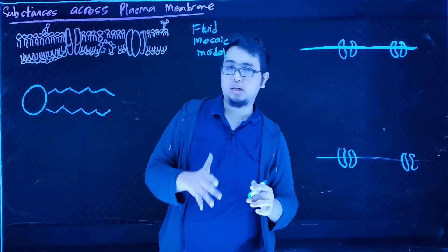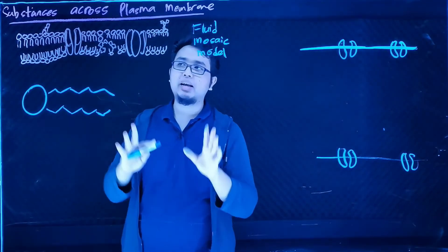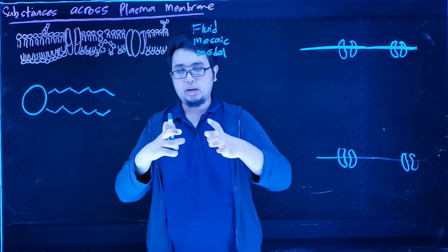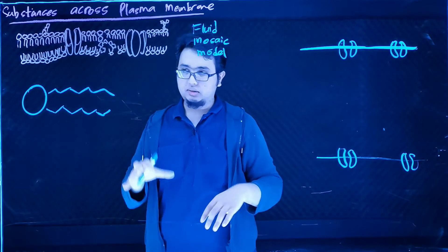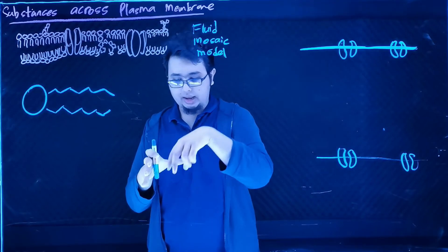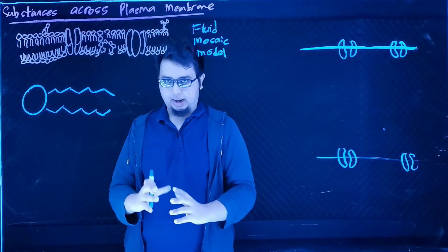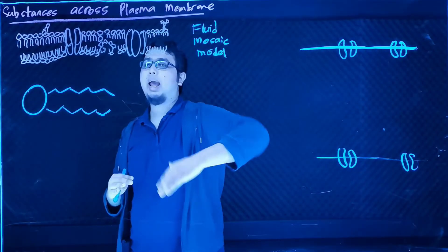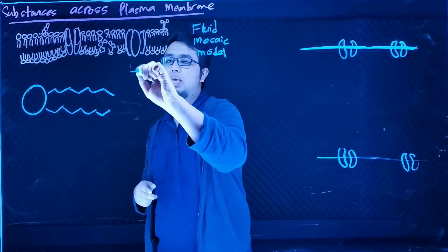Why is it named the fluid mosaic model? Because Singer and Nicolson discovered that the plasma membrane acts similarly to tiles on the ground, but they are also fluid in nature. The distribution of proteins inside or on top of the plasma membrane is arranged in a very random manner, like tiles, and they are fluid, allowing only certain substances to move through.